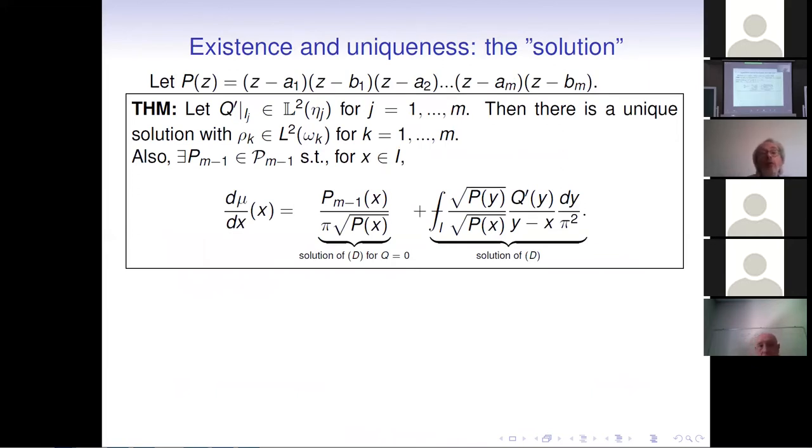So there is a theorem of existence and uniqueness of the problem which we have posed. If we suppose that the derivative of the external field is a restriction on the i_j-th interval, is a function in L^2 of eta_j for all j, then there is one and only one solution rho_k in L^2 of omega_k which gives our equilibrium equations, which solves the transformed problem.